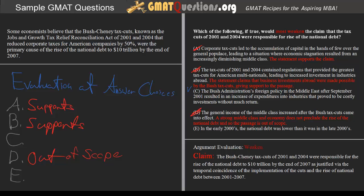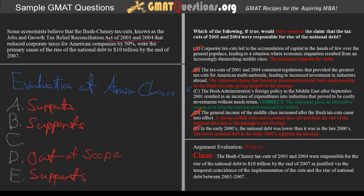E: In the early 2000s, the national debt was lower than it was in the late 2000s. What we get here is a situation in which the national debt was lower prior to the implementation of the tax cuts, and it suggests that after they were implemented the national debt increased. It was lower in the early 2000s prior to the tax cuts becoming effective, which by the late 2000s would have been responsible for the rise of the national debt. So what we get in E is a statement that actually supports rather than weakens the passage. This makes E incorrect, leaving C as the only possible correct answer choice due to the fact that it most effectively weakens the claim.